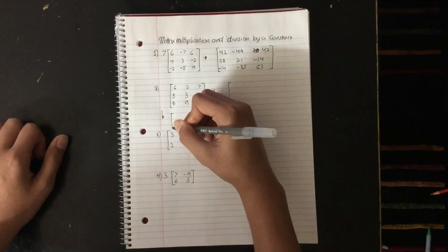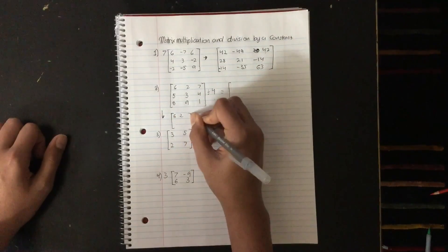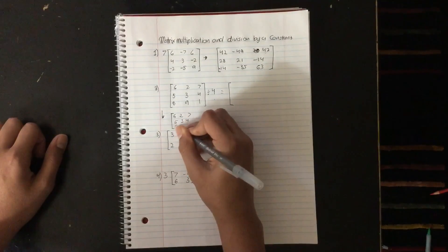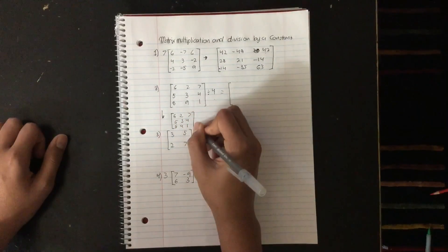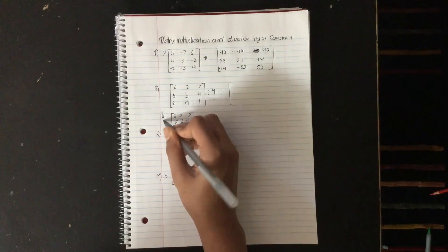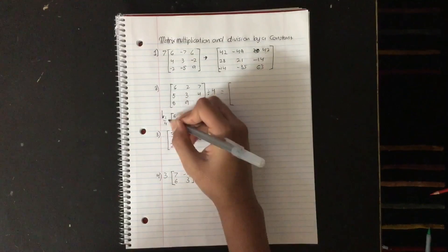So here let me just draw my matrix. It'll be 6, 2, 7, 5, 3, 4, and then 8, 9, 1. Okay, after that, what I mean by that is the 4 will go into the denominator, and all that's left on top is 1, so it'll be 1 by 4, and then you basically multiply that.